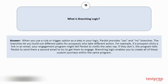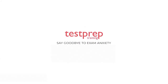Question number fifteen: What is branching logic? When you use a rule or trigger option as a step in your logic, Pardot provides yes and no branches. The branches let you build out different paths for prospects who take different actions. For example, if a prospect clicks a link in an email, your engagement program might tell Pardot to notify the sales rep; if they don't, the program tells Pardot to send them a second email to try to get them to engage. Branching logic enables you to create all of these custom journeys within the same program. For more such videos, subscribe to our channel.